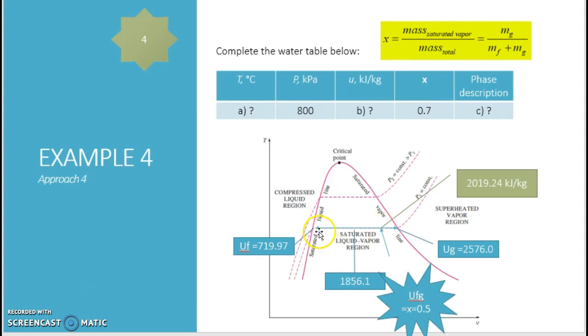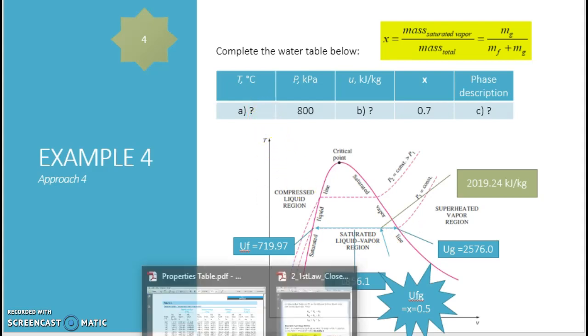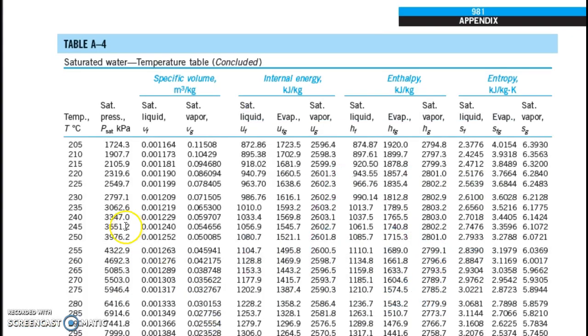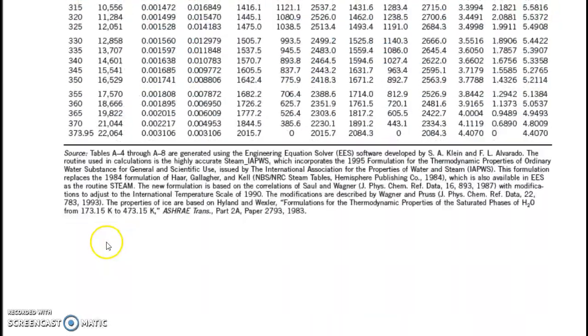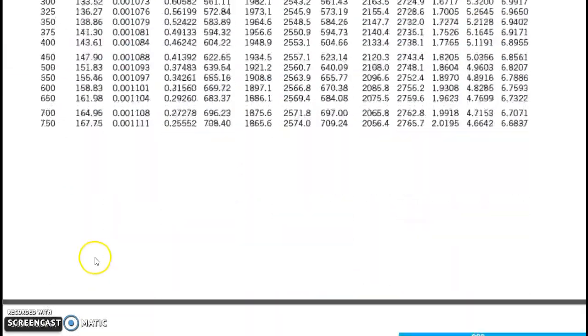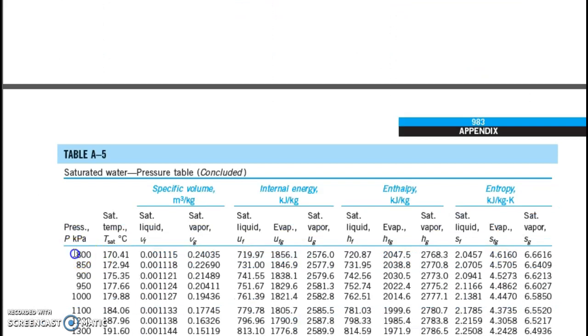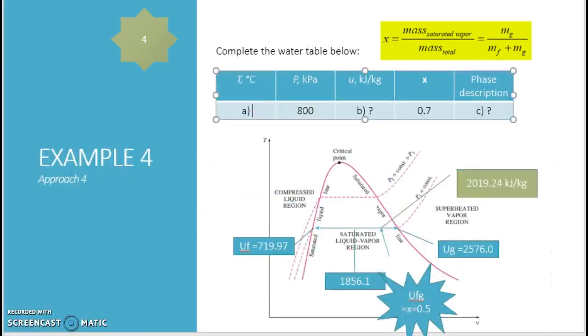Since this process is happening at saturated liquid vapor region, so your temperature can be obtained just next to your pressure value. So in this case 800, the temperature is 170.41 degree C. And the U is you already obtained it here. And phase description is saturated mixture.